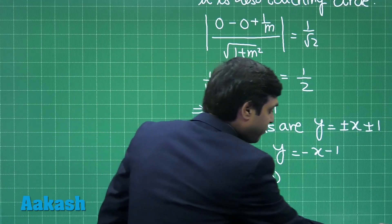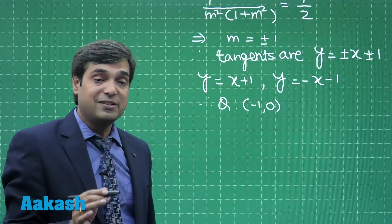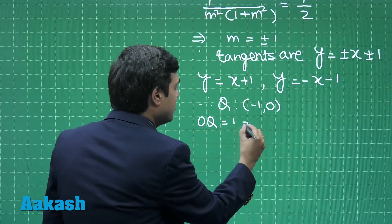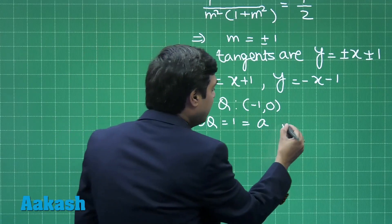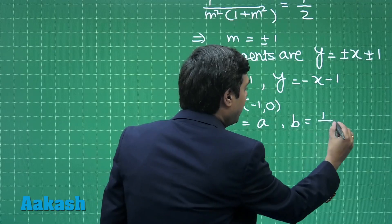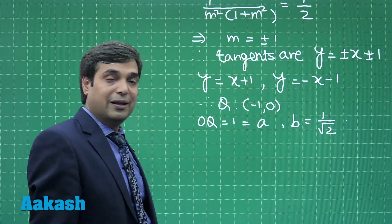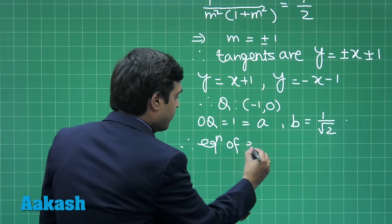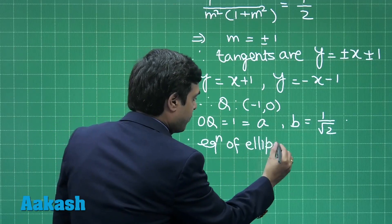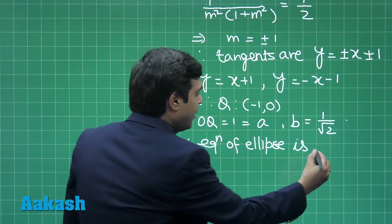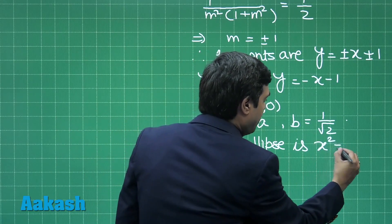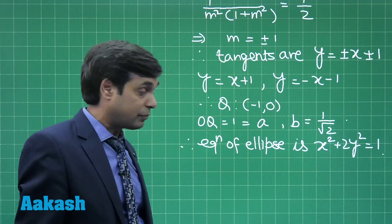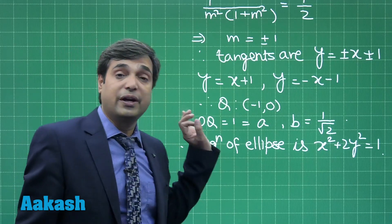Now it is given in the question that OQ is the semi-major axis, meaning that OQ length which is 1, so this is a. Also given to me b as 1/√2. Therefore, equation of ellipse is x² + 2y² = 1. This is the equation of required ellipse.